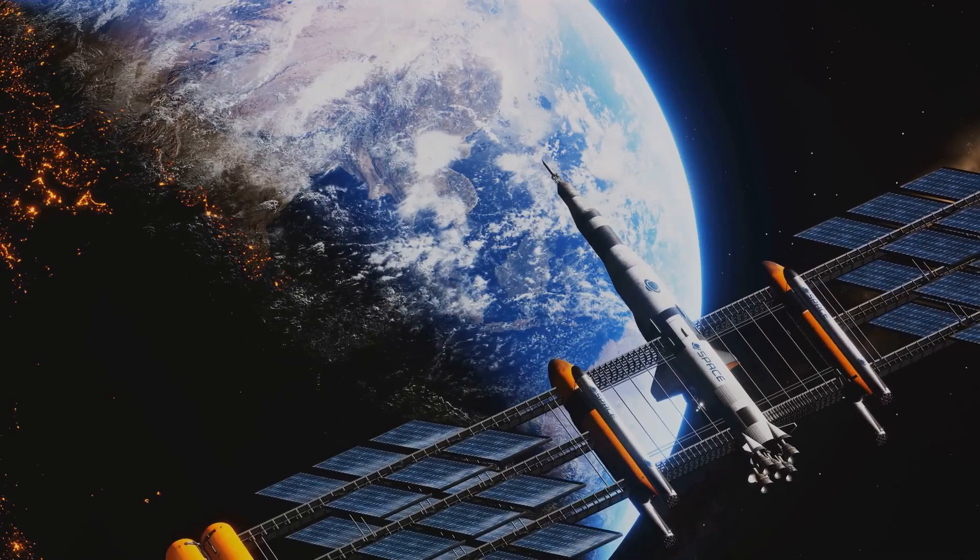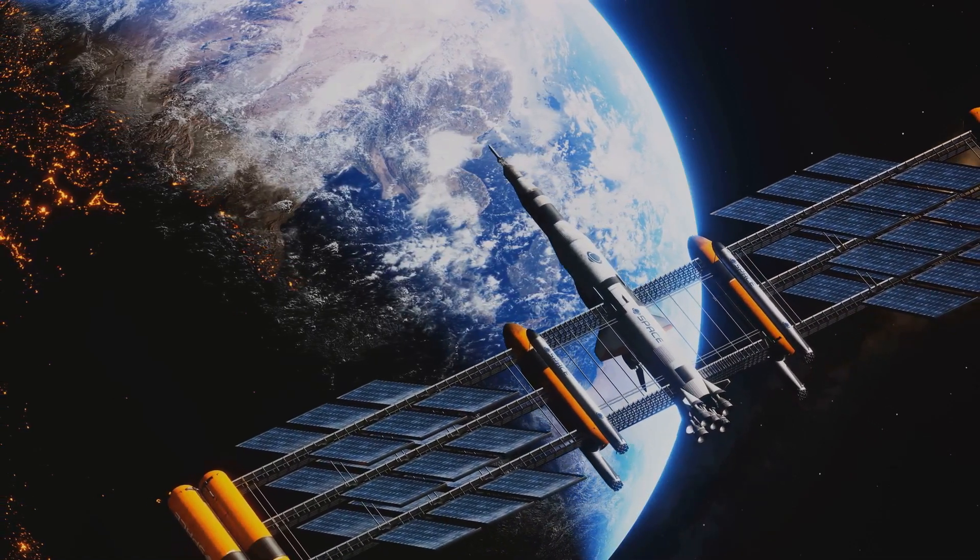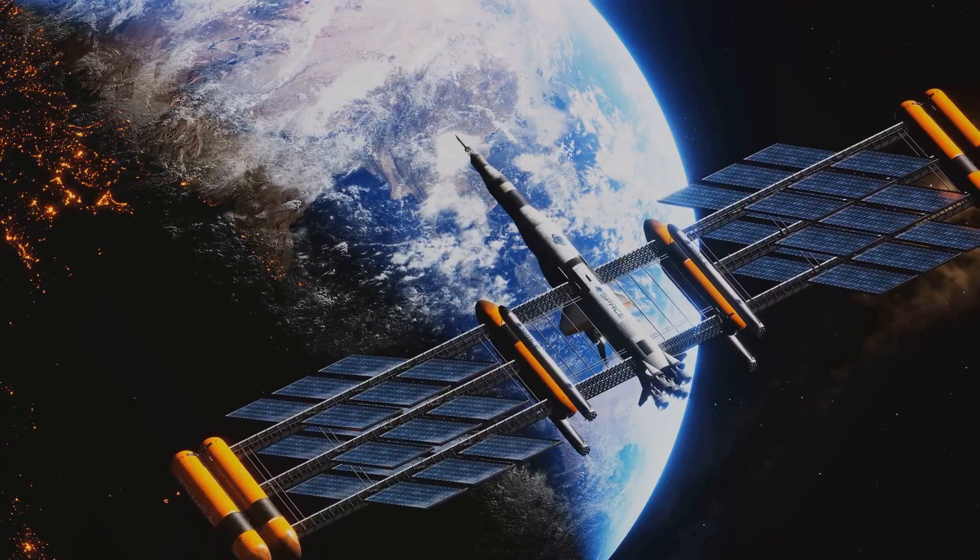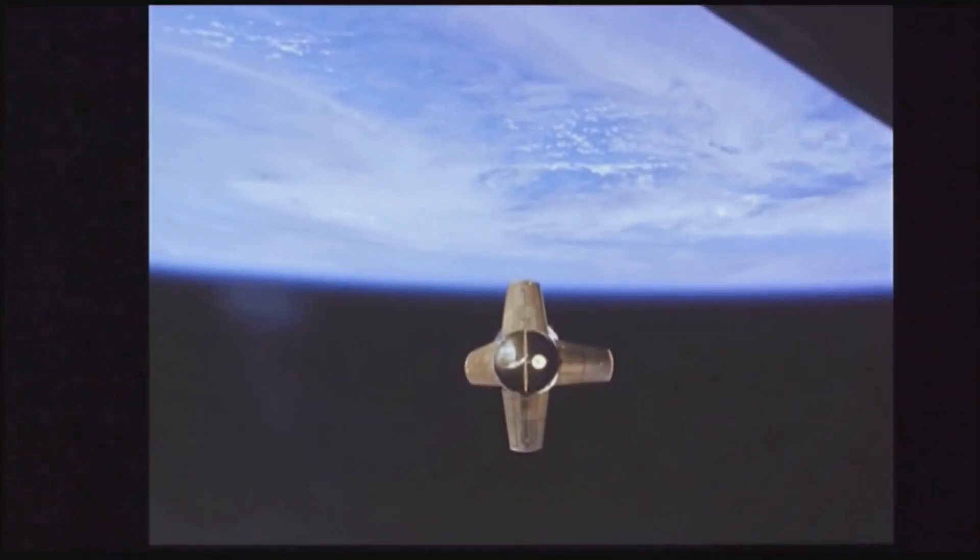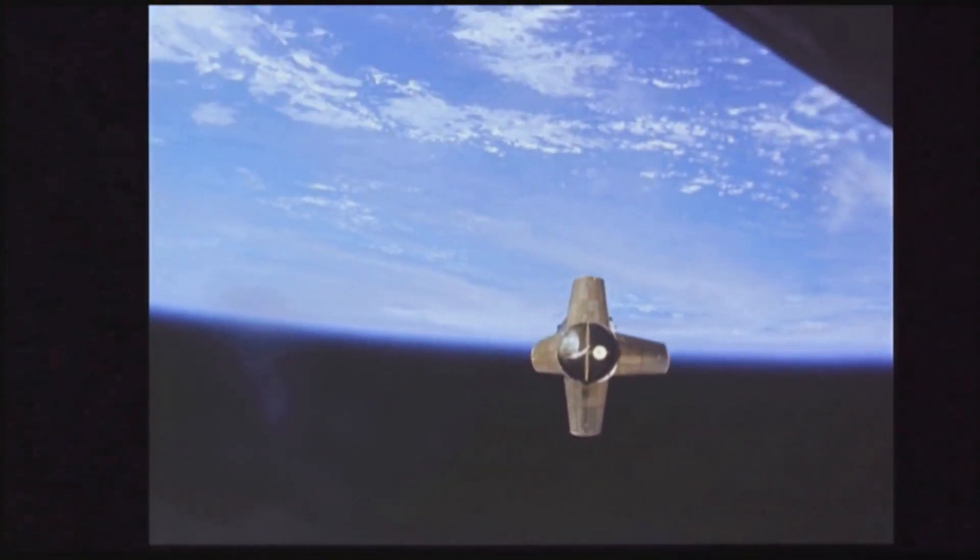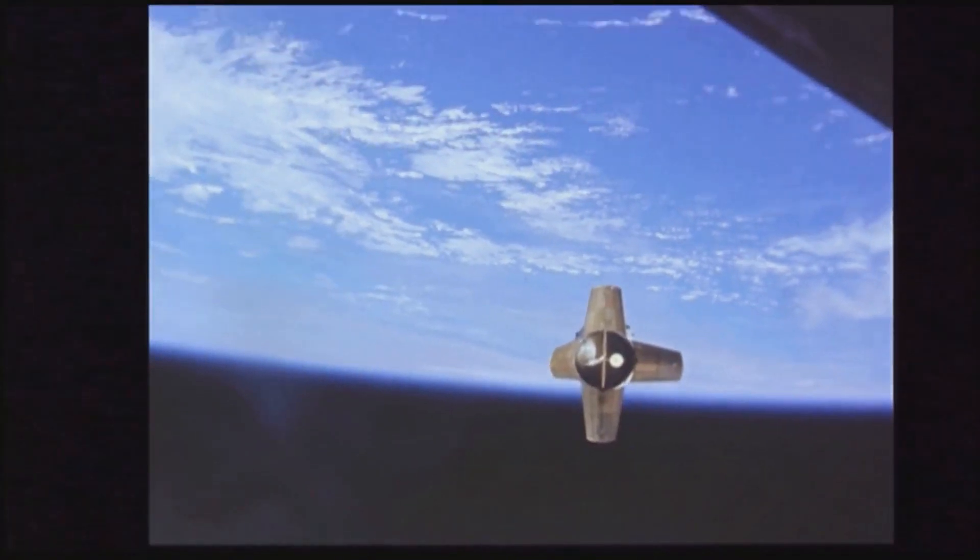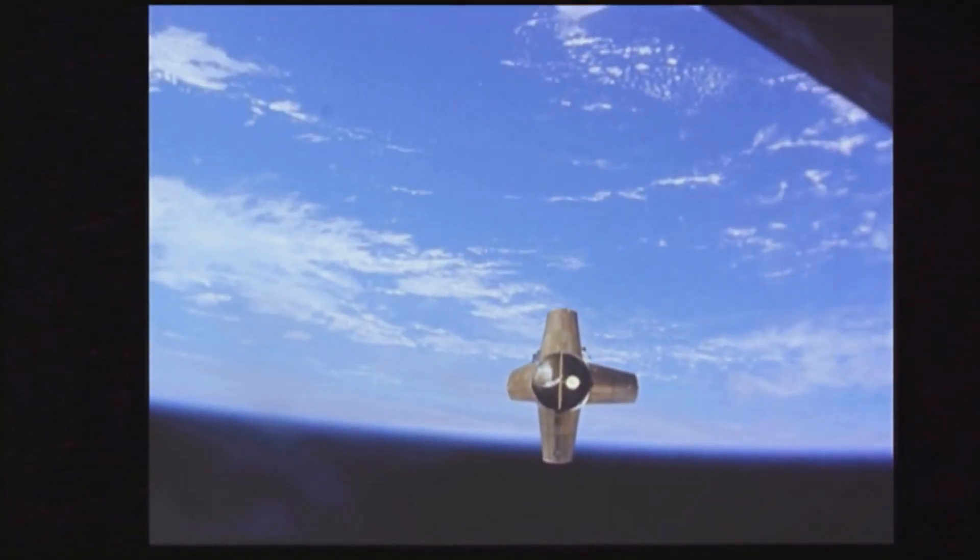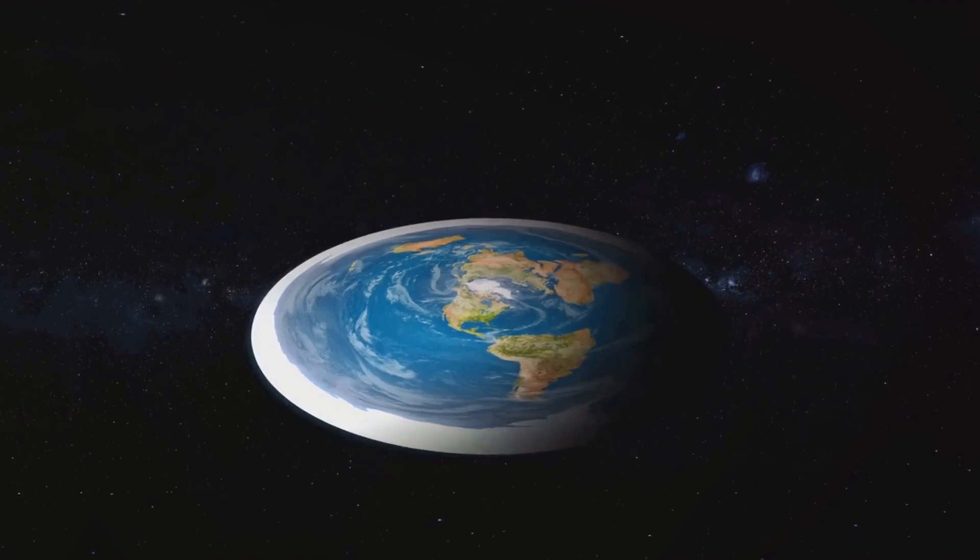Then there's the claim that images of Earth from space are fabricated. But consider this: multiple nations and private companies have launched satellites and astronauts into space, all returning with similar images of a spherical Earth. It's unlikely, to say the least, that all these entities from all over the world are collaborating in a grand conspiracy.